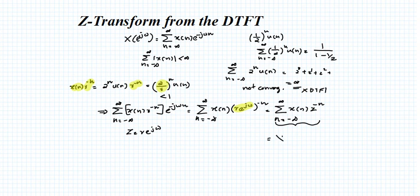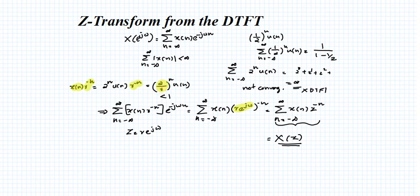So the Z-transform is a modified version of DTFT. In this example with the signal (2/r)^n, if you choose r less than 2, the signal does not converge again. Only if the r value is greater than 2 will you get a value less than 1, and the signal converges. If r is less than 2, the condition fails and we cannot evaluate the Z-transform. This valid range of r values is actually known as the ROC — Region of Convergence — and this is the relationship between DTFT and Z-transform.